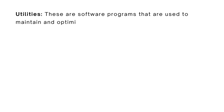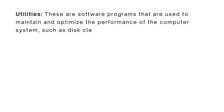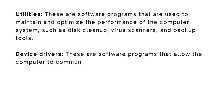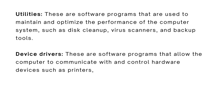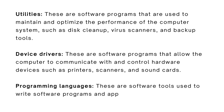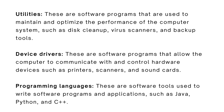Utilities are software programs used to maintain and optimize the performance of the computer system, such as disk cleanup, virus scanners, and backup tools. Device drivers are software programs that allow the computer to communicate with and control hardware devices such as printers, scanners, and sound cards. Programming languages such as Java, Python, and C++ are also part of the software side of a computer system and are used to write software programs and applications.